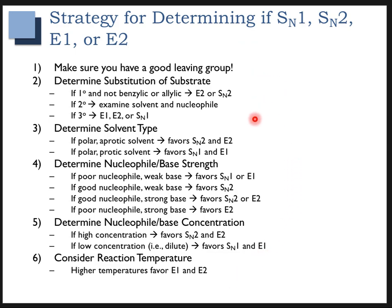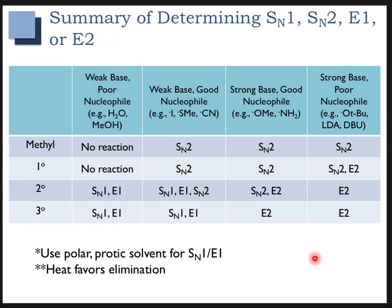You want to walk through all of these factors: substitution helps narrow things down, then look at solvent, nucleophile/base strength, concentration, and reaction temperature. Check off all of these boxes and see which reaction type has the most check marks — that's probably what's happening. I also have a table you can use alongside this previous slide to sort out which reaction is which.